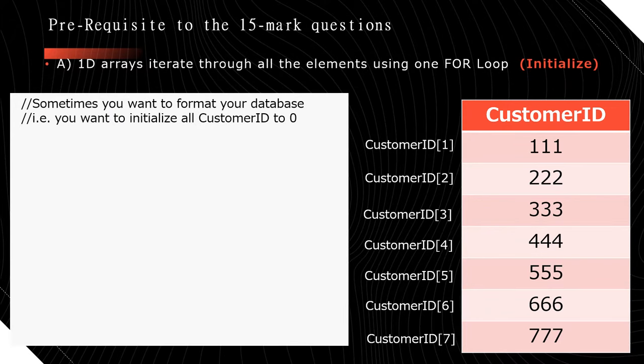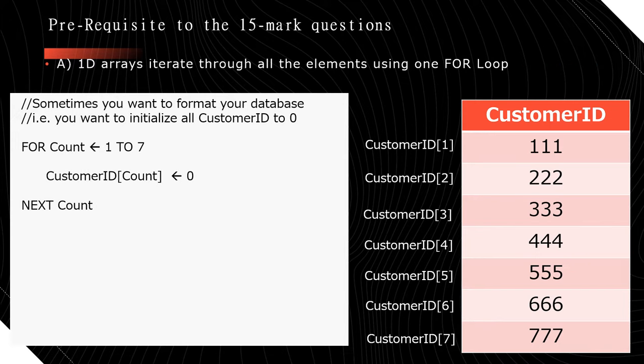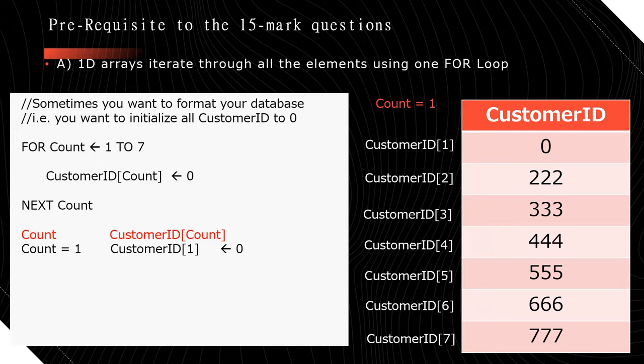Sometimes you might want to initialize all the data to 0 — maybe it's a new month and you want to start with all CustomerIDs at 0, then input new customer numbers later. Because this is a one-dimensional array and we know the size, the most suitable loop is a for loop. The code reads: for count assigned from 1 to 7, CustomerID[count] assigned 0, next count.